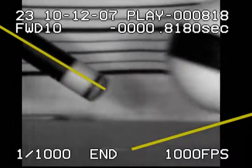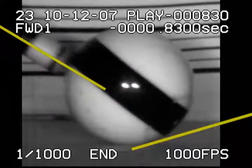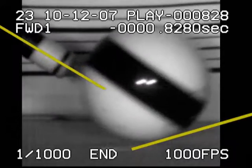The yellow lines indicate the original direction of the cue, the center line of the cue, and the angle that the cue ball comes off the table.